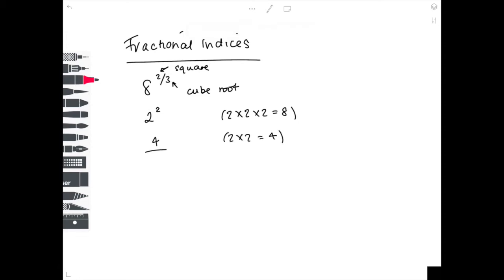In our next example we've got 25 to the 3 over 2. So we sort out the denominator first of all. It's a 2 which means we have to square root. So the square root of 25 is 5, the reason being is that 5 times 5 is 25.